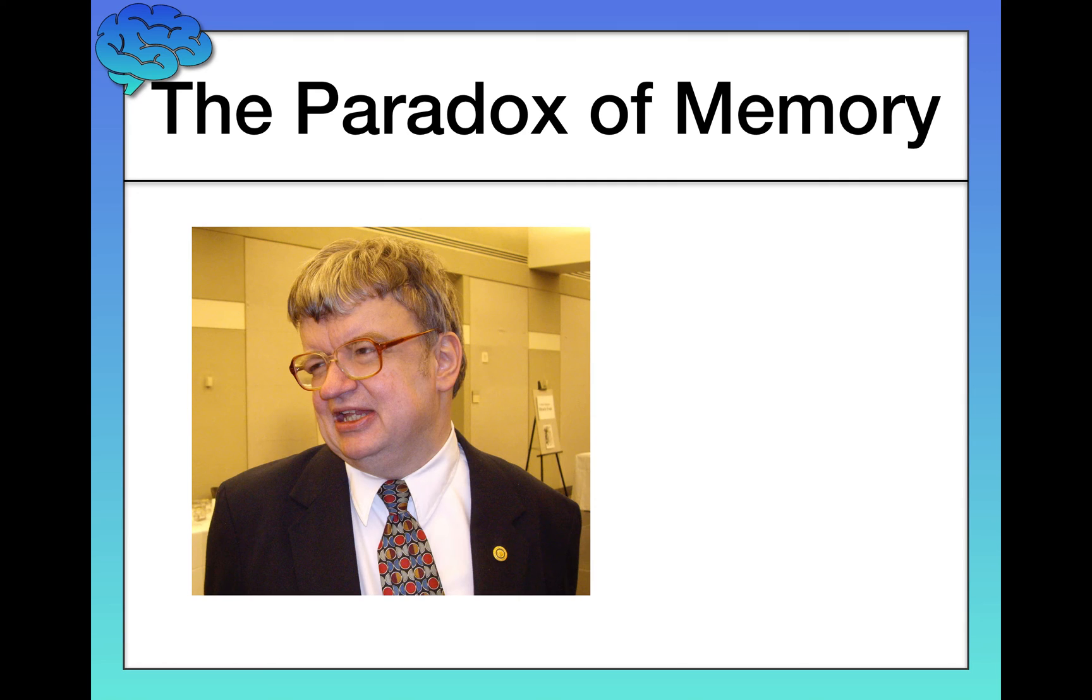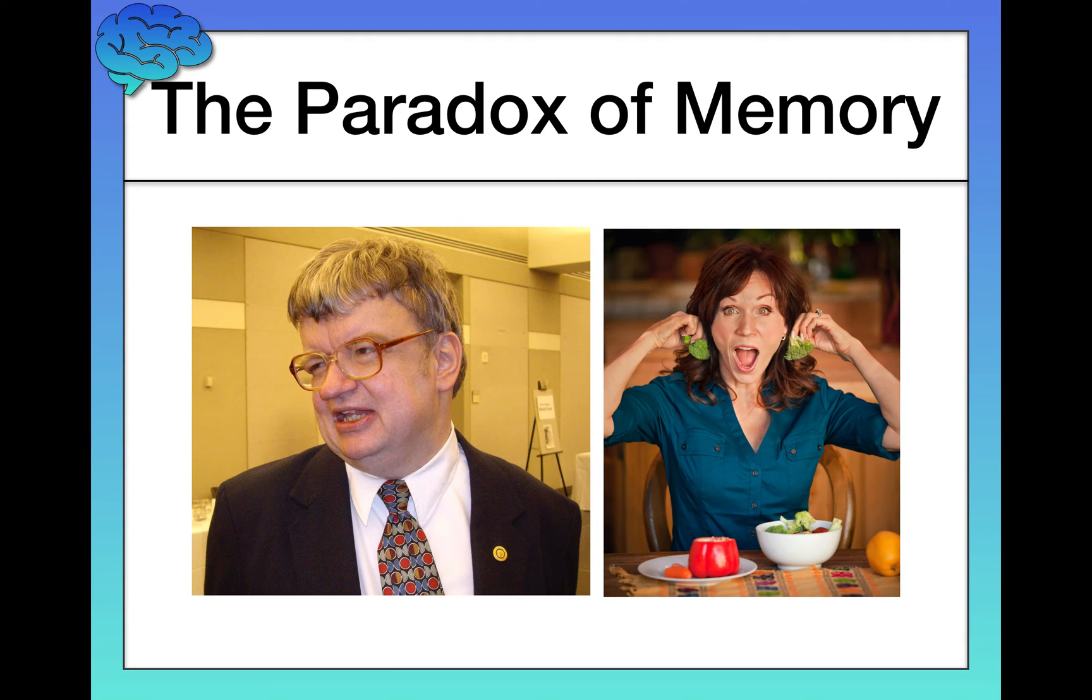This is Marilu Henner. She's an actress with what we call superior autobiographical memory. She remembers every day of her life, everything she wore, everything she ate, the major events that happened on different days. Again, she knows whether each day in a date that you can mention is a Monday, Tuesday, Wednesday, Thursday, or so on. Really impressive things that we can't really do. So memory has the ability to be very amazing, and yet at the same time we forget where we left our keys every day, right?